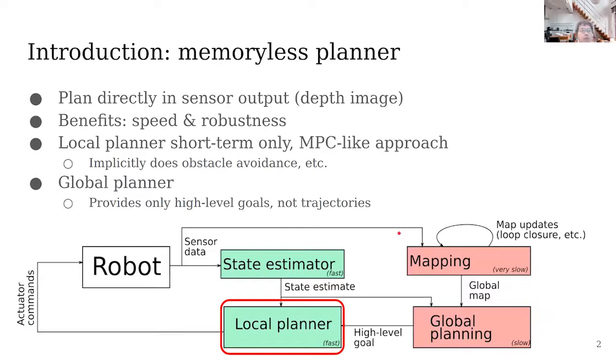Our memoryless planner plans directly in sensor output, which is depth images from a depth camera in our case. The benefit of planning directly in sensor output is speed because it's computationally cheaper and doesn't require building a map or data structure such as Octomap and KD-tree.